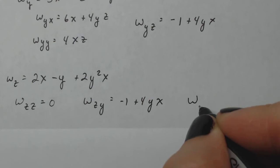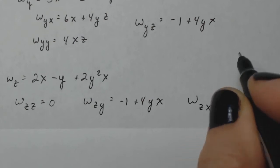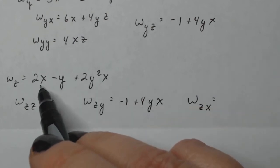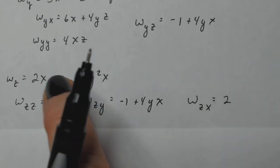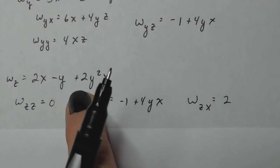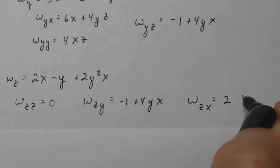And then I need W Z X and there is a two there. So it would be two and I'm taking the derivative with respect to X now of this guy. So that's going to be two Y squared.